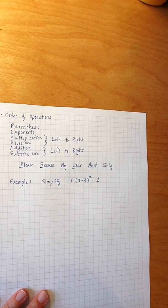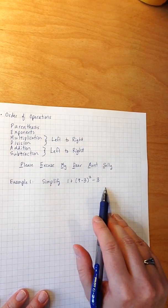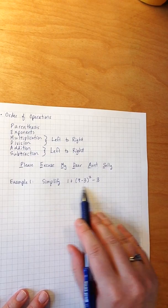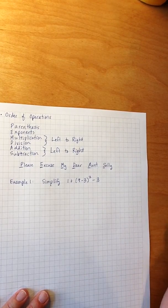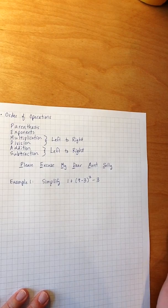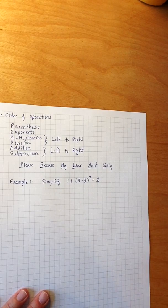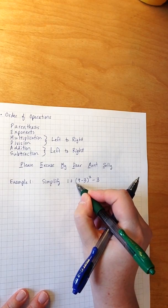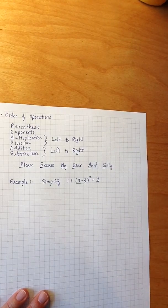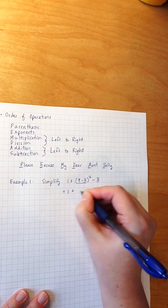When I'm looking at this problem, I'm asking myself, do I have any parentheses and can I simplify anything in the parentheses? In this case, yes, I do have parentheses. Right here, I have parentheses with 9 minus 3, so I'm going to simplify that first.